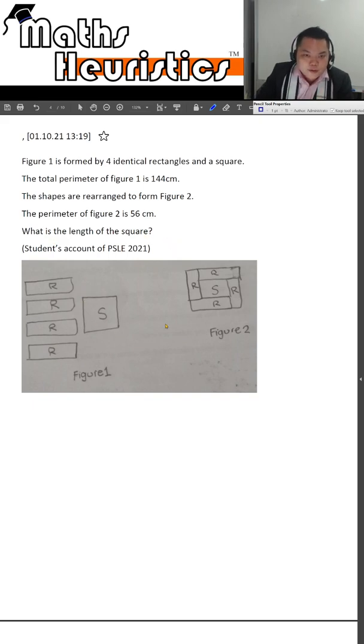Now if you have attended my speed runs for P6s, over the course of 10 weeks, you would have heard me say this at least 5 times. You always want to mark out equal lengths first so that it will be easier for you to keep track.